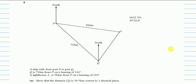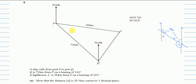Before we start, remember: whenever you see bearings, there are always north lines, and then there is always some line going through those north lines. This angle and this angle will always add up to 180° because they are supplementary — the two north lines are parallel. If this angle is A, then the alternate angle here will also be A; if this is B, the alternate angle will also be B. This always works when solving bearing questions.